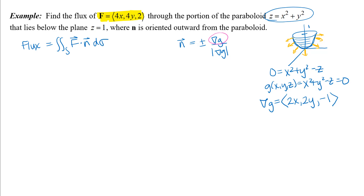I'm going to go ahead and choose the direction first. Here's how I think about this: I use the picture and look at my gradient vector and think about whether it's pointing in the correct direction, focusing on whatever is the easiest component. For this one, that's the K component of this gradient vector. The K component is negative, which means these gradient vectors will all be pointing generally down. Looking at my picture, all of those outer unit normals I drew have a downward component — a negative K component. So this is pointing in the correct direction, and I'm going to choose plus.